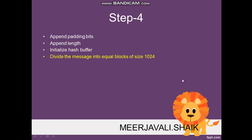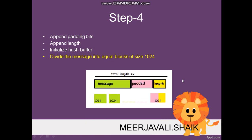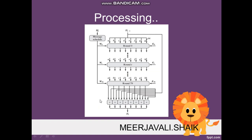I will show a diagram to make step four easy to understand. We added padded bits to meet the required block size and added the length of the message, so this is the total message. Step four says to divide the message into equal blocks of size 1024 bits. We divide the total message into 1024-bit equal blocks, as seen in the diagram showing all the divided blocks of the entire message.